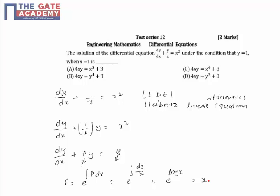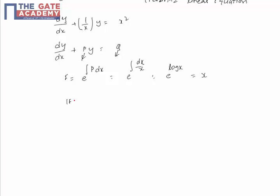Now the solution is: integrating factor times y equals integration of q times integrating factor dx. So, integrating factor times y equals, the integrating factor is x, so xy equals integral of q which is x squared times x dx.